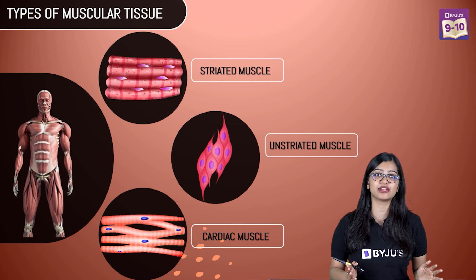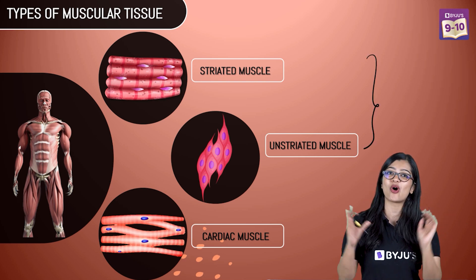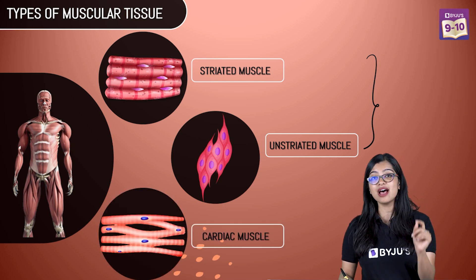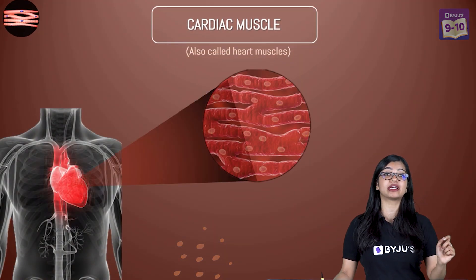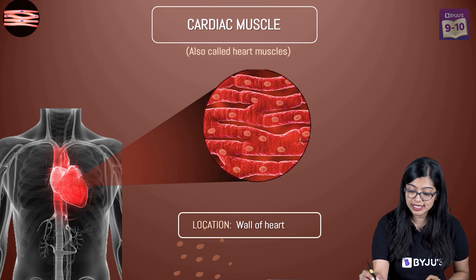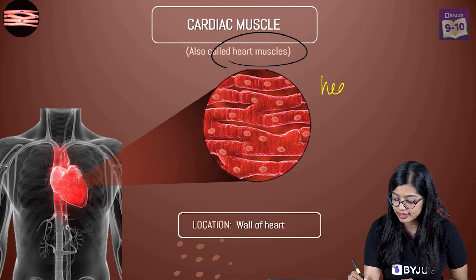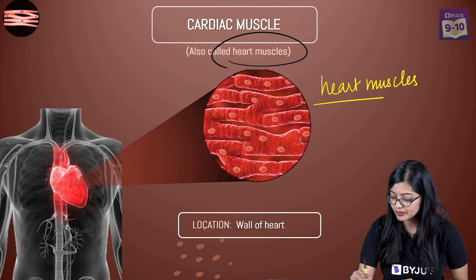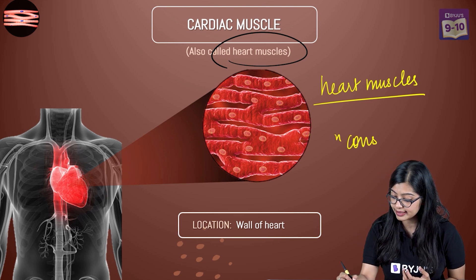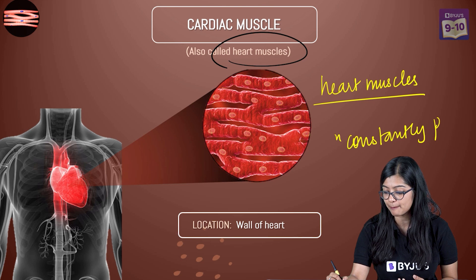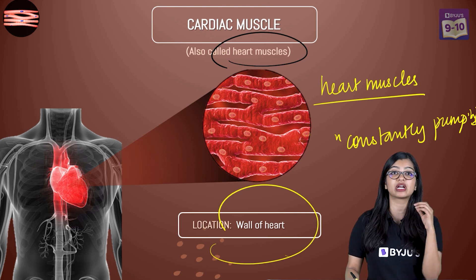It's important to understand the difference between striated and unstriated muscles as this is commonly asked in exams. Now let's move on to the last type — cardiac muscle. Cardiac muscle is a very special kind of muscle that makes up the walls of the heart, which is why we also call them heart muscles. The heart is constantly beating and pumping blood, and this is made possible by the cardiac muscles.